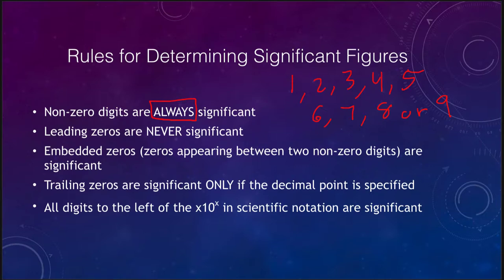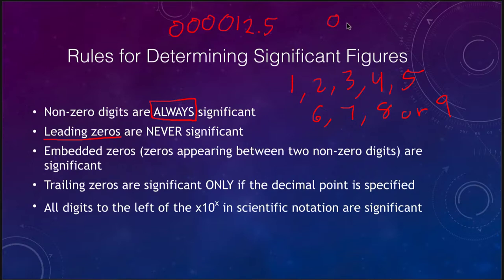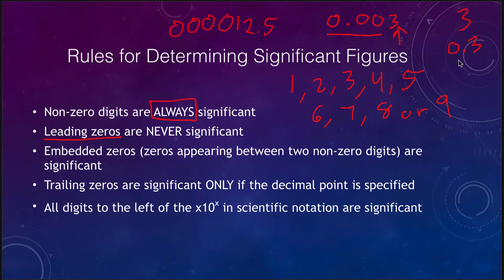The second rule is that leading zeros are never significant. So if you have the number 12.5, you can put zeros before it but they are never significant — they do not count. Where this really matters is in decimals: if you write 0.003, that is only one significant figure. These leading zeros are needed as placeholders, but they are not significant. Starting from the left, work your way right until you find a non-zero number — those leading zeros are never significant.